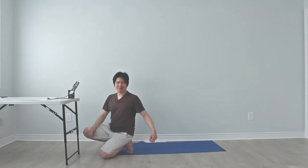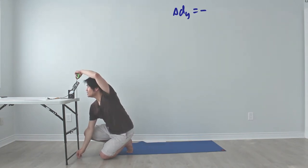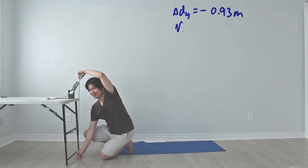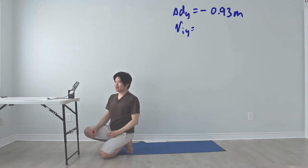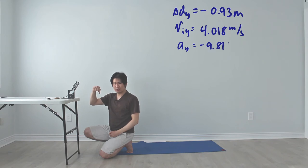In today's example, our delta dy is at 93 centimeters. Just remember that this 93 centimeters is 93 centimeters down, so our delta dy will be at negative 0.93 meters.